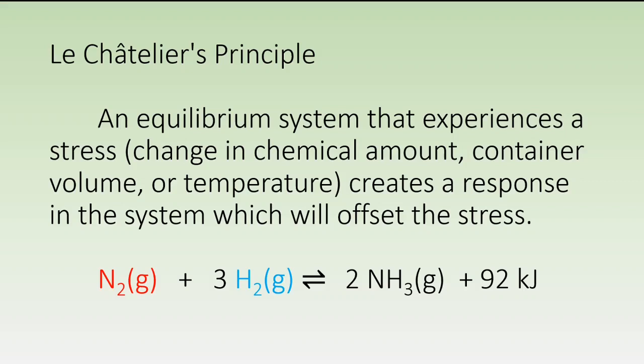This video explores Le Châtelier's Principle, which looks at what happens to chemical equilibria when they experience stress. Stress can be defined as something that changes the concentration of one of the chemicals, what would happen if the volume of the system changes creating a pressure change, or if you heat up or cool down the system causing a temperature change. Generally speaking, when you stress a chemical equilibrium, there will be a response in the system that will offset the stress.